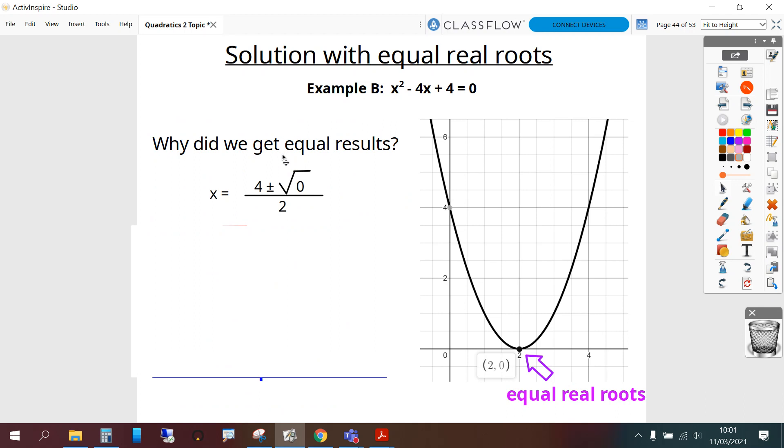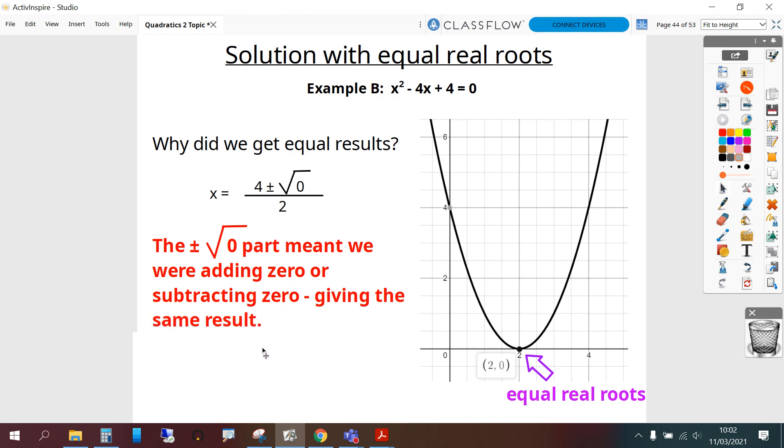Why did we get just the one answer or answers which were equal to each other? Well the plus or minus 0 part just meant that we were adding 0 or subtracting 0 which is the same thing. So it gives us the same result. So in this case we say we found equal real roots.